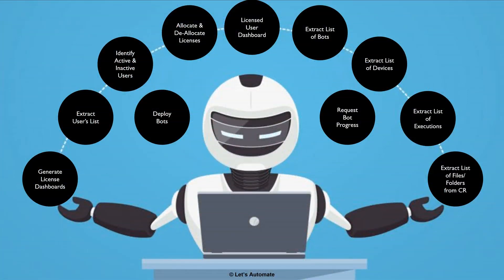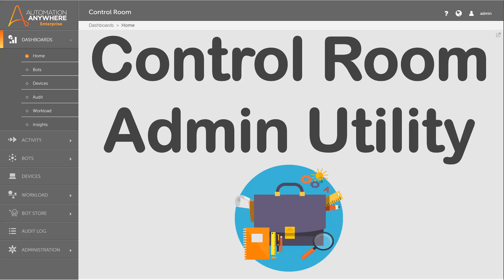It can help you generate a license dashboard, extract user lists, identify active and inactive users, allocate and deallocate licenses, extract the list of robots, devices, executions, control room files and folders. It can even help you deploy bots and report the progress of execution. This robot is called the Control Room Admin Utility.